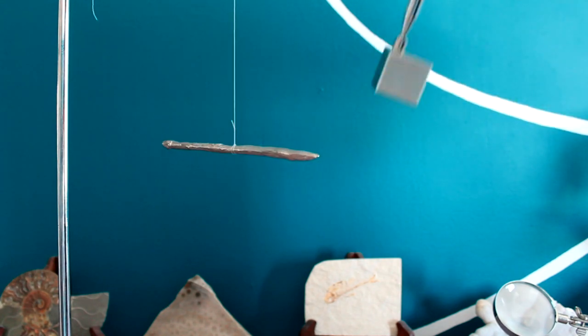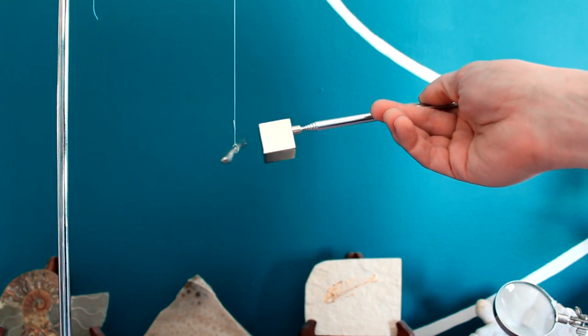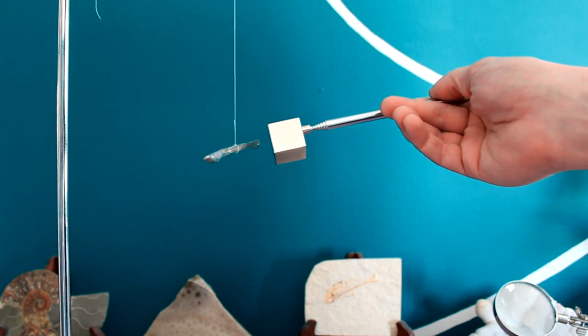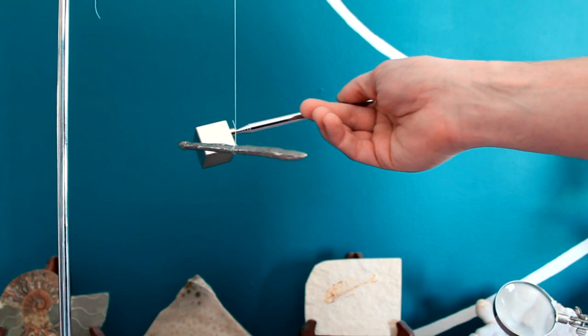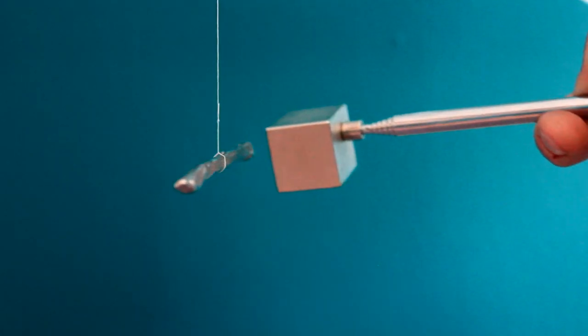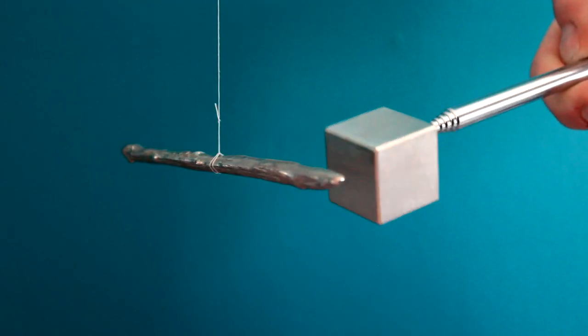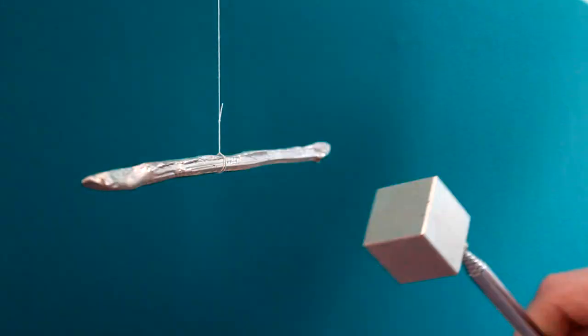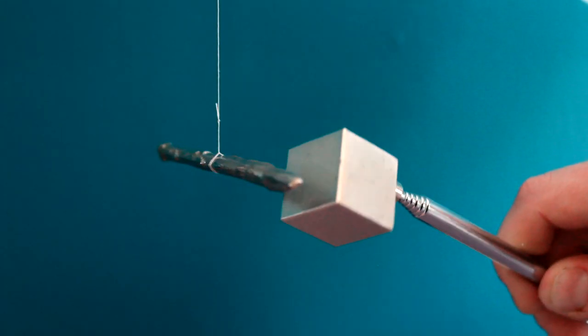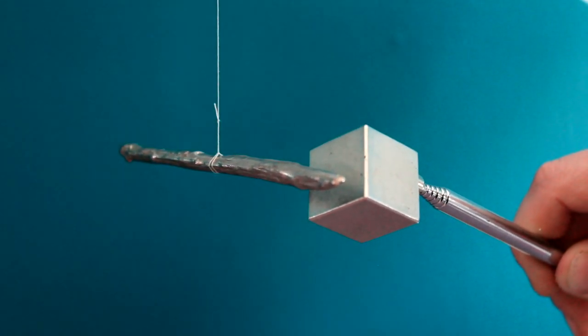Now watch what happens. We bring the magnet close to the bismuth, and very slowly, it starts to repel away. It's a slow, very weak effect, but still definitely observable if we set up our experiment the correct way.